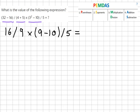And now we're just going to quickly get rid of that parentheses. So we'll do 16 over 9 times 9 minus 10 equals minus 1 over 5.